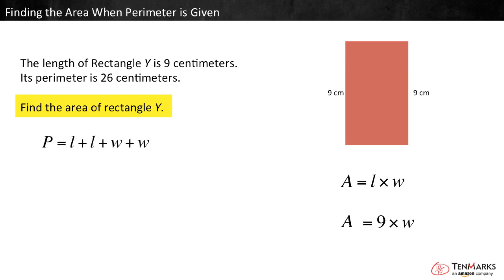We know perimeter equals length plus length plus w plus w. We'll let L stand for length and w stand for width. For this rectangle, perimeter is 26 and L equals 9. So, 26 equals 9 plus 9 plus w plus w.